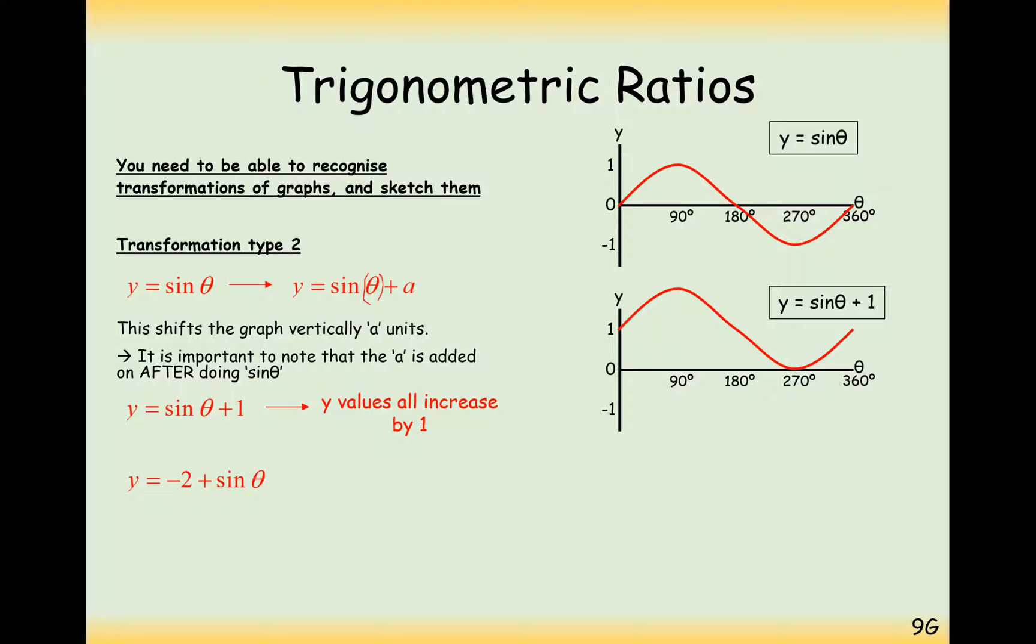y equals minus 2 sine theta. This is going to be a translation down by 2. So considering your axis intersections here, if we're moving down by 2 from this original graph, we're going to be down at minus 1 at our highest point. So we never actually are going to intersect the x-axis.